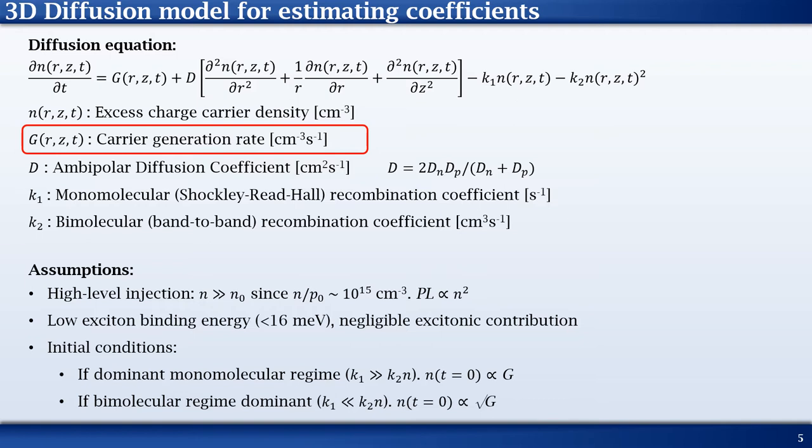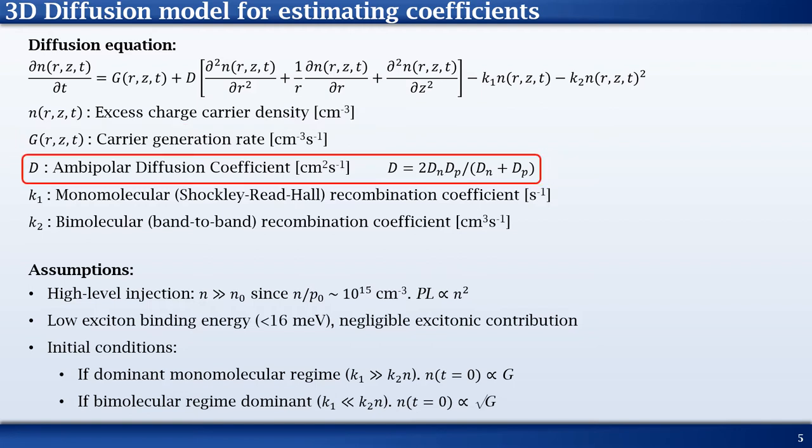In this model, however, we set G to 0 and use an experimentally-measured initial spatial profile to simulate the progression in time. D is the ambipolar diffusion coefficient. Here, we assume that electrons and holes diffuse equally despite slight differences in reality owing to individual properties such as effective mass.